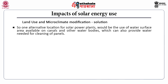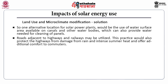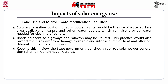One alternative location for solar power plants is the use of water surface area on canals and other water bodies, which can also provide water for cleaning of panels. Roads adjacent to highways and railways may also be utilized, protecting highways from rain damage and summer heat while offering additional comfort to commuters. The state government launched a rooftop solar power generation scheme in Gandhinagar, Gujarat.